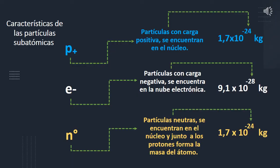Las partículas subatómicas son tres: protones, electrones y neutrones. Los protones son partículas con carga positiva, se encuentran en el núcleo y tienen una masa de 1.7 × 10⁻²⁴ kg. Los electrones son partículas con carga negativa, se encuentran en la nube electrónica y poseen una masa de 9.1 × 10⁻²⁸ kg. Los neutrones son partículas neutras, no tienen carga, y junto a los protones forman la masa del átomo, con una masa de 1.7 × 10⁻²⁴ kg.